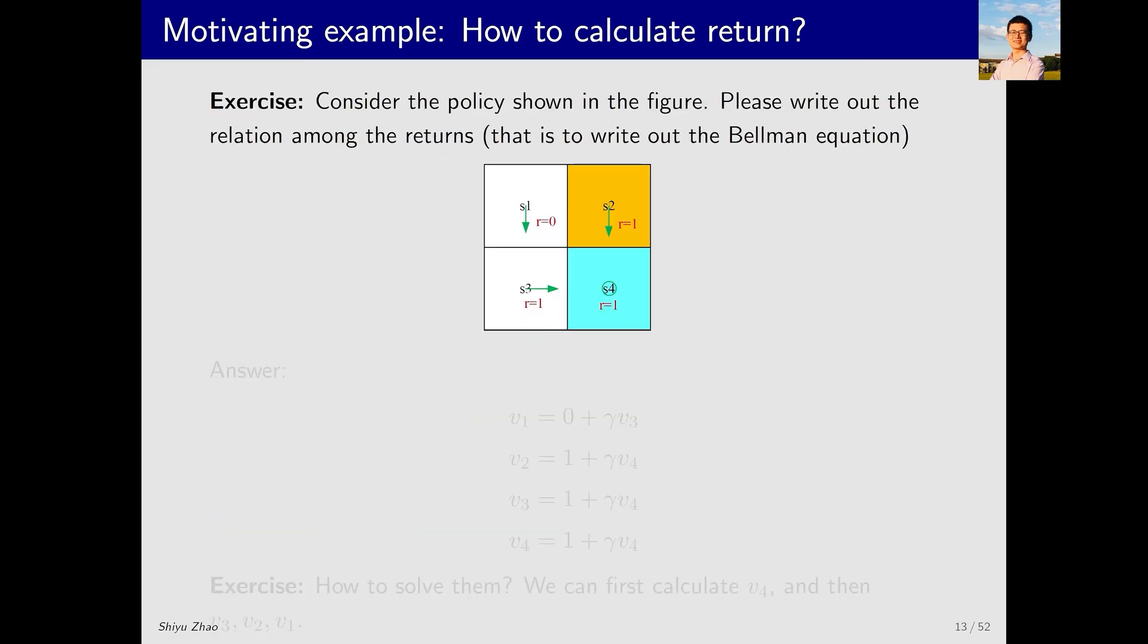Let's demonstrate by revisiting the first example we considered today. Can we write out the relation among the different returns under this policy, or can we write out the Bellman equation? It's quite straightforward. Starting from state 1, we jump directly to a subsequent state. Hence, the value from state 1 V1 equals the immediate reward of 0 plus the value of state 3 V3. We need not worry about the specific value of V3. Starting from here, the return we can get is V3. Similarly, for V2, moving from here to here yields an immediate reward of 1, followed by the value of state 4 V4. Thus, we obtain a set of expressions for V1, V2, V3, and V4.